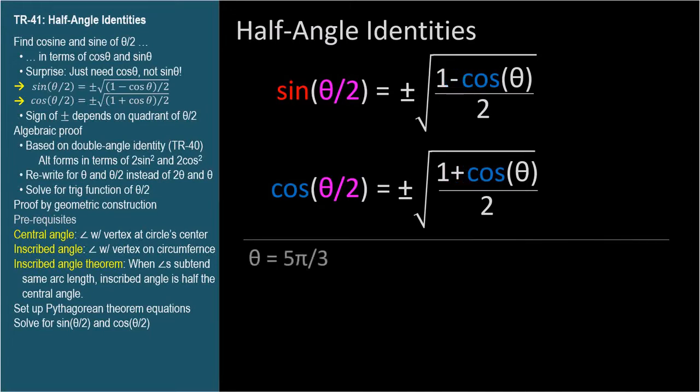Let's try these identities out with theta equals 5π over 3. We'll find the cosine and sine of half of 5π over 3, which is 5π over 6, using the half-angle identities. We already know the cosine and sine of 5π over 6 are negative square root of 3 over 2 and 1 half respectively, but we'll use the half-angle identities to verify that they work.